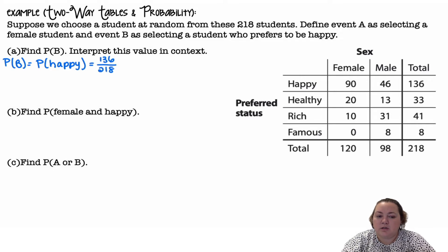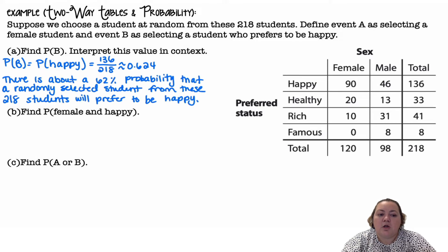So it's 136 out of the table total of 218, which comes out to about 62.4%. So there is about a 62% probability that a randomly selected student from these 218 students will prefer to be happy.